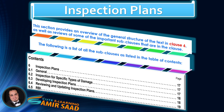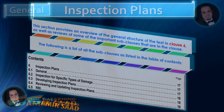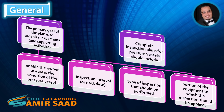The following is a list of all the sub-clauses as listed in the Table of Contents. In the following slides, we highlight important information contained in Clause 6 accompanied by the sub-clauses. The primary goal of the plan is to organize inspections and supporting activities that enable the owner to assess the condition of the pressure vessel.